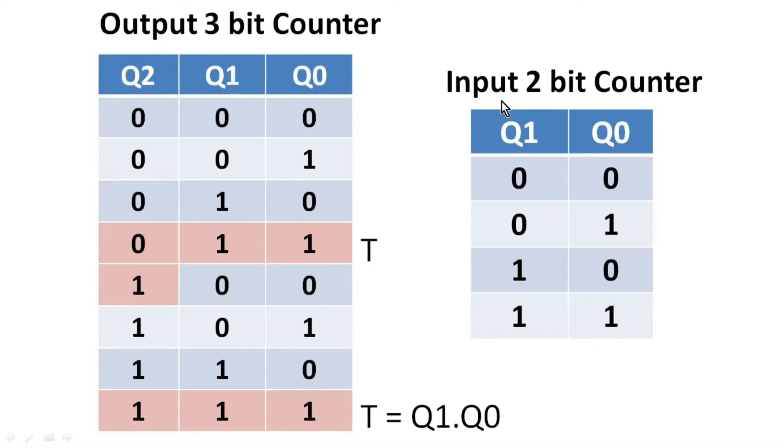So for Q1 and Q0, I can use this input 2-bit counter. That is why I have given the same name Q1 and Q0. If you see the behavior, it is going from 00, 01, 10, 11, 00, 01, 10, 11. We only have to calculate the third bit that is Q2.